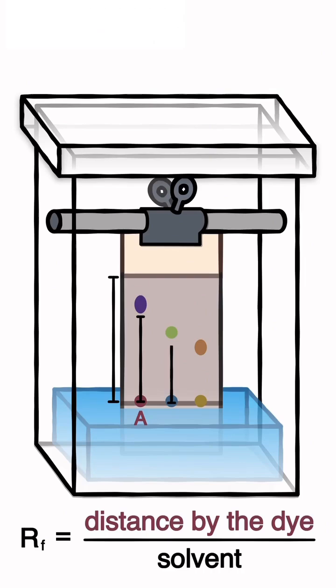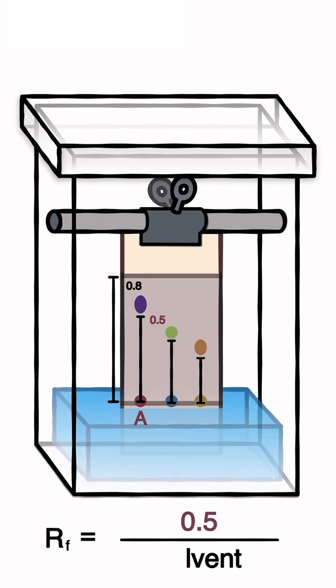And you would do the same for all of them, and you would get values. Say this was about 0.5 and this is about 0.8, right? So 0.5 over 0.8 and you would get your artifact. So depending on how big your artifact is, that means the more soluble that particular die is.